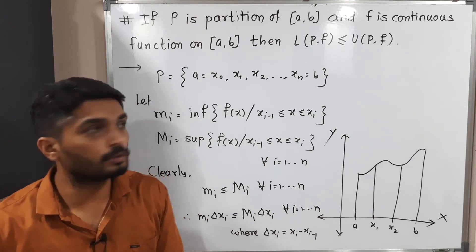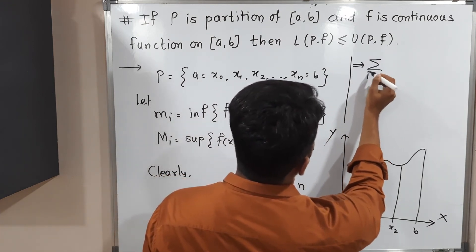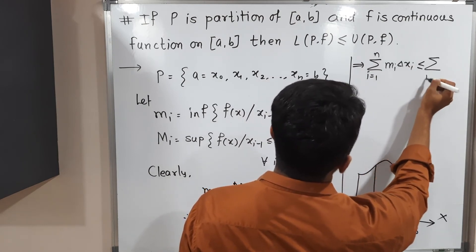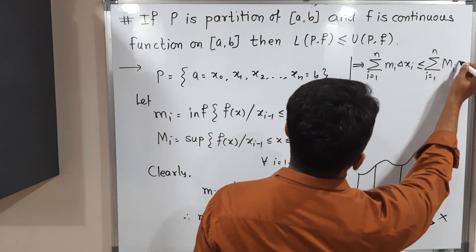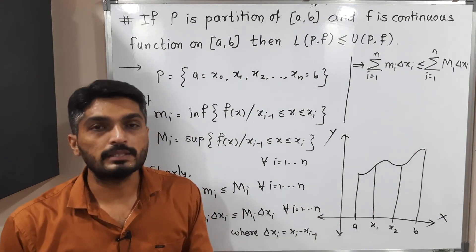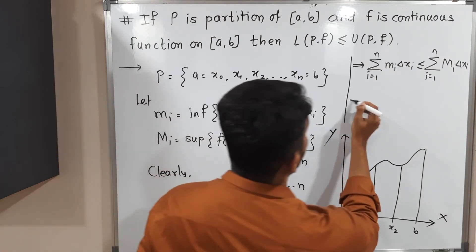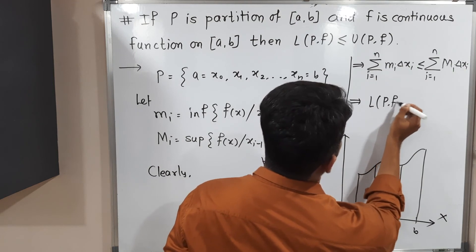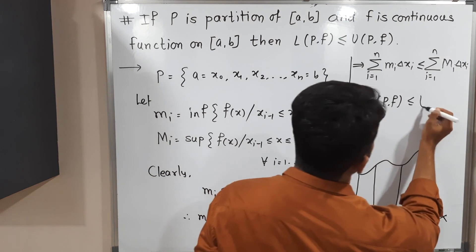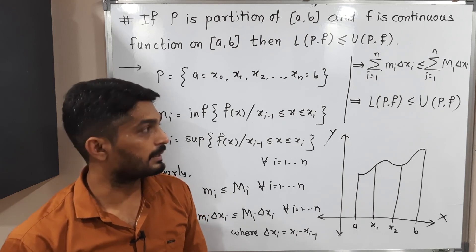So let us take the summation of both sides. Taking the summation, we have: Σ (i=1 to n) mi · Δxi ≤ Σ (i=1 to n) Mi · Δxi. Since the inequality holds for all i, adding them gives this summation. The left side is nothing but the lower sum L(P, f), and the right side is nothing but the upper sum U(P, f). Therefore, L(P, f) ≤ U(P, f), and in this way we have proved that the lower sum is always less than or equal to the upper sum.